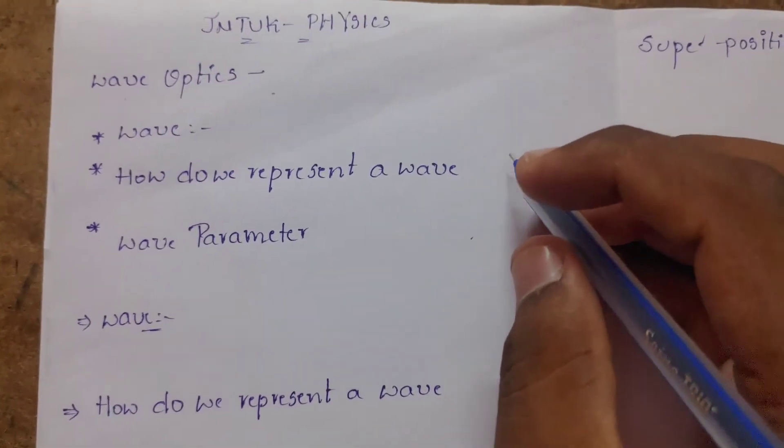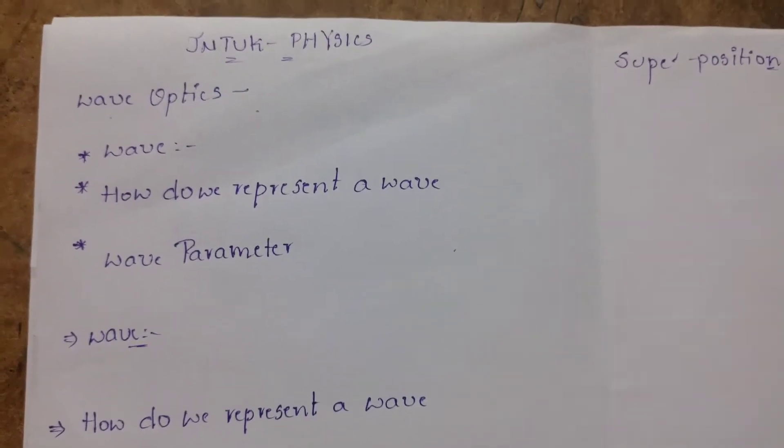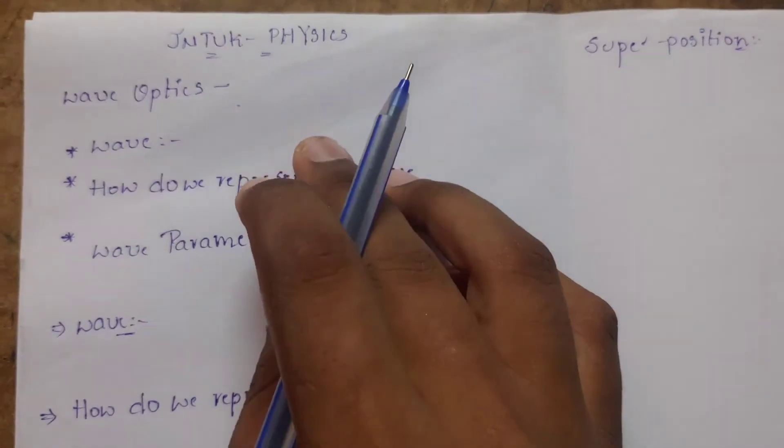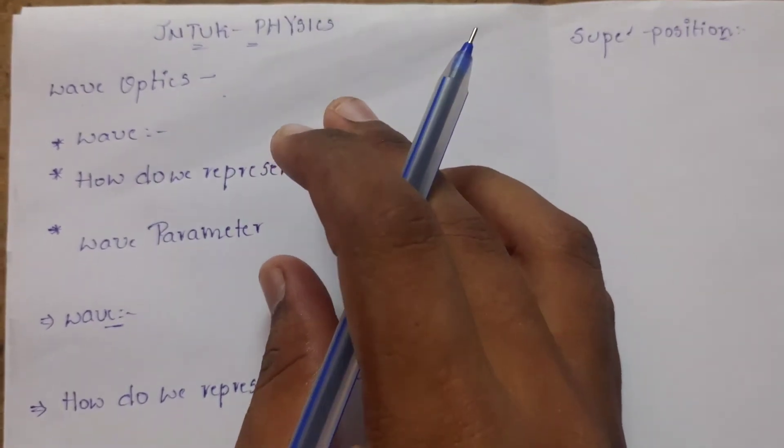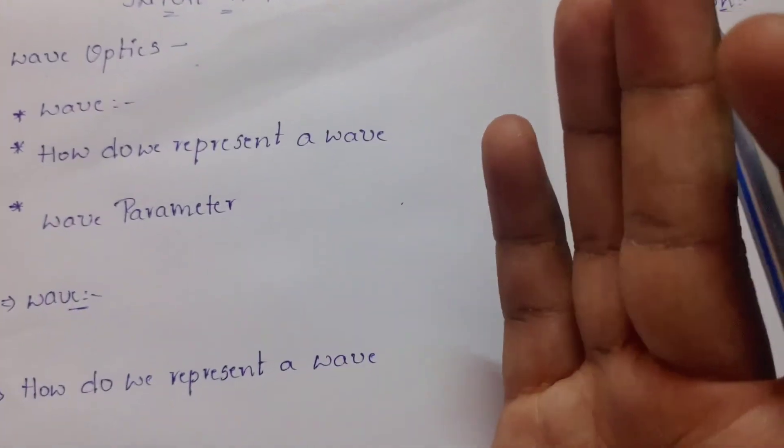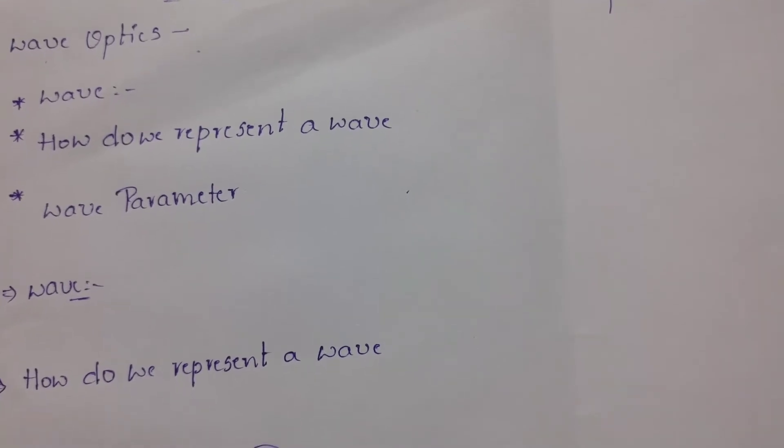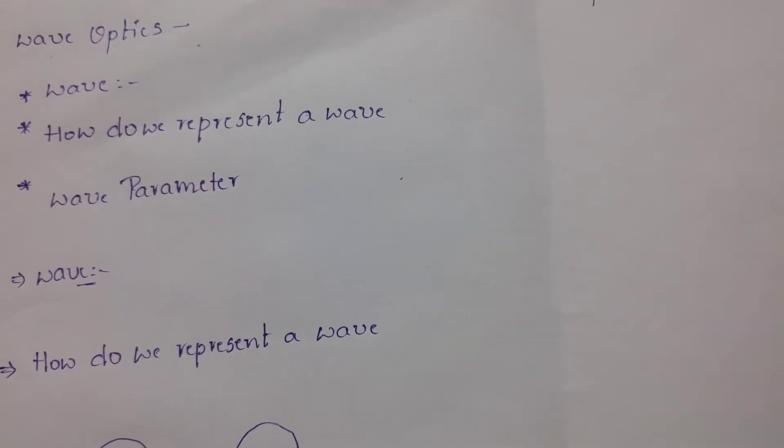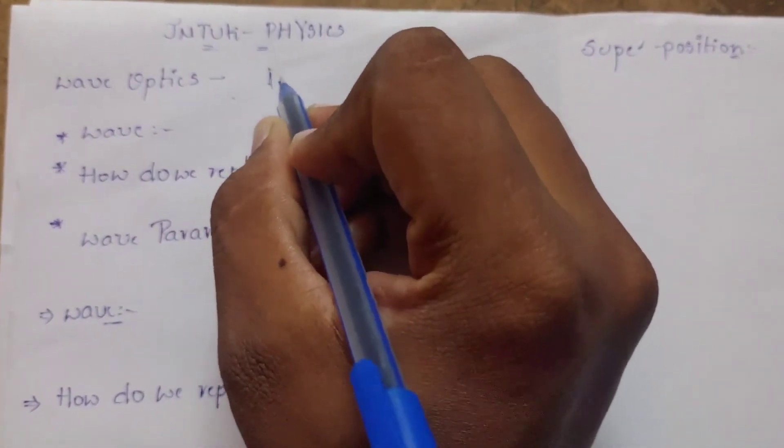Unit-wise explanation is needed. In the first unit of physics, JNTK R19, the first unit gives an option of wave optics. Light operates as a wave, so we'll cover wave properties and the properties light inherits.